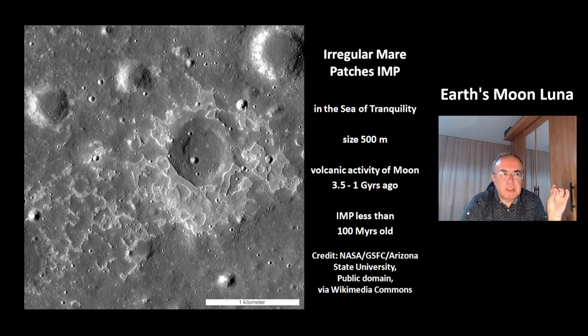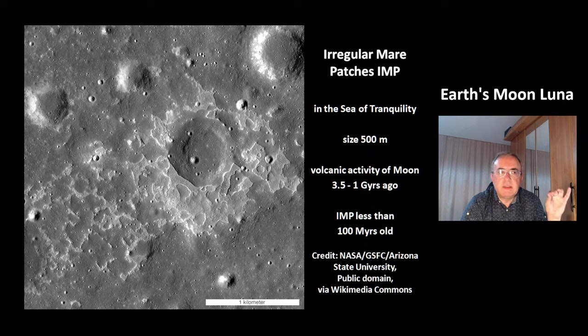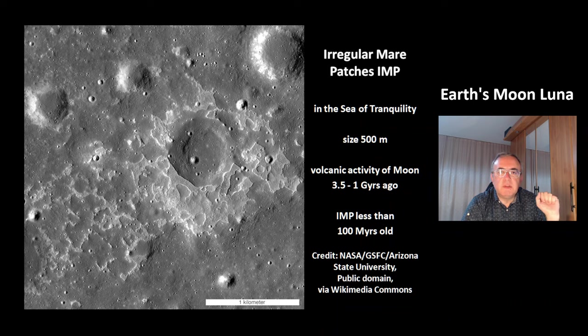The volcanic activity of the Moon lasted from 3.5 billion years ago to 1 billion years ago. But these IMP irregular mare patches are less than 100 million years old.